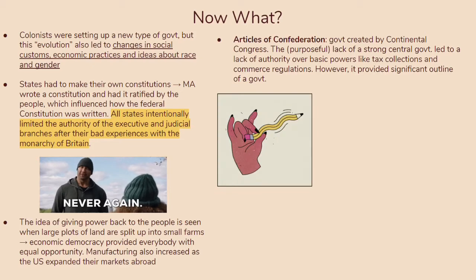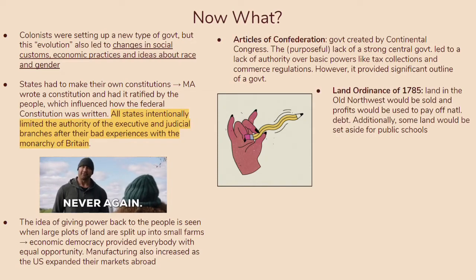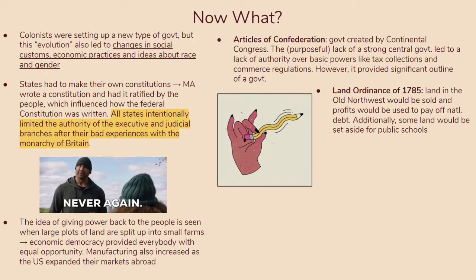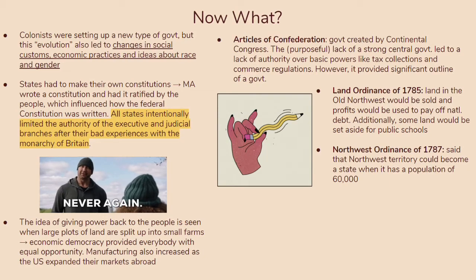I think of it like one of those squiggly rubber pencils you'd get at the Scholastic Book Fair in elementary school — yes, it is a pencil, but does it work really well? Not really. However, this government was successful in some ways. For example, it passed the Land Ordinance of 1785, which said that land in the Old Northwest would be sold and profits used to pay off the national debt incurred from the Revolutionary War. Additionally, some land would be set aside for public schools, showing they started to value education more. They also passed the Northwest Ordinance Act of 1787, which said the Northwest Territory could become a state when it had a population of at least 60,000 — showing they were trying to expand borders and grow as a republic.